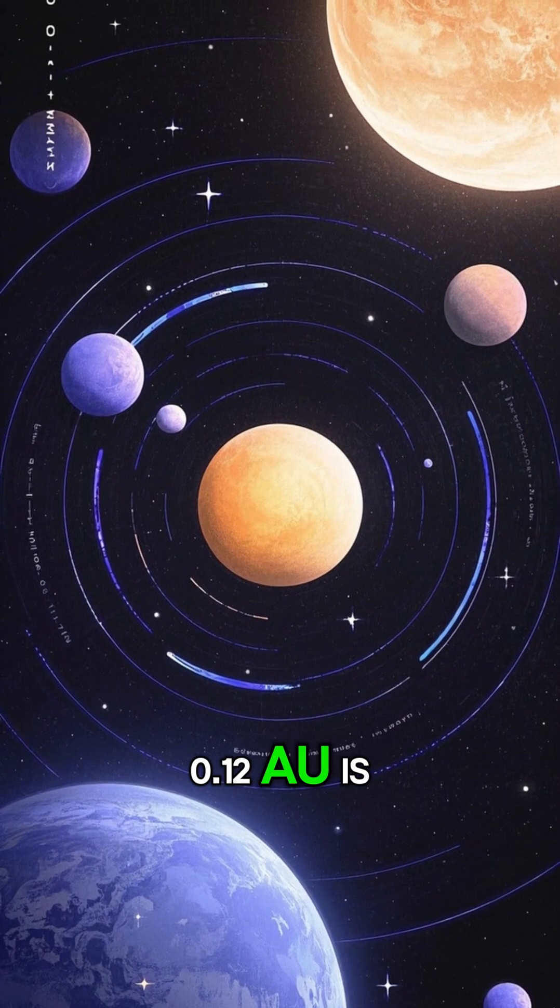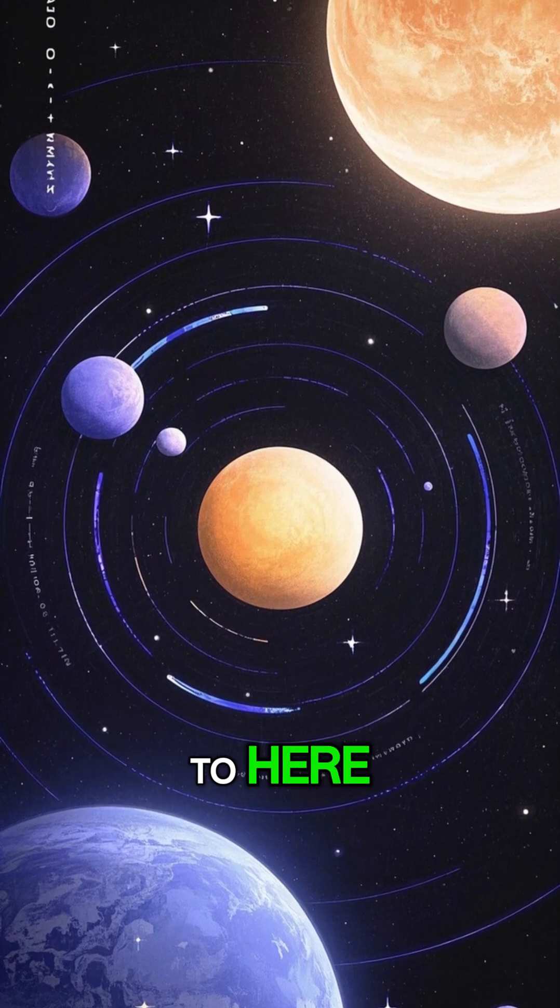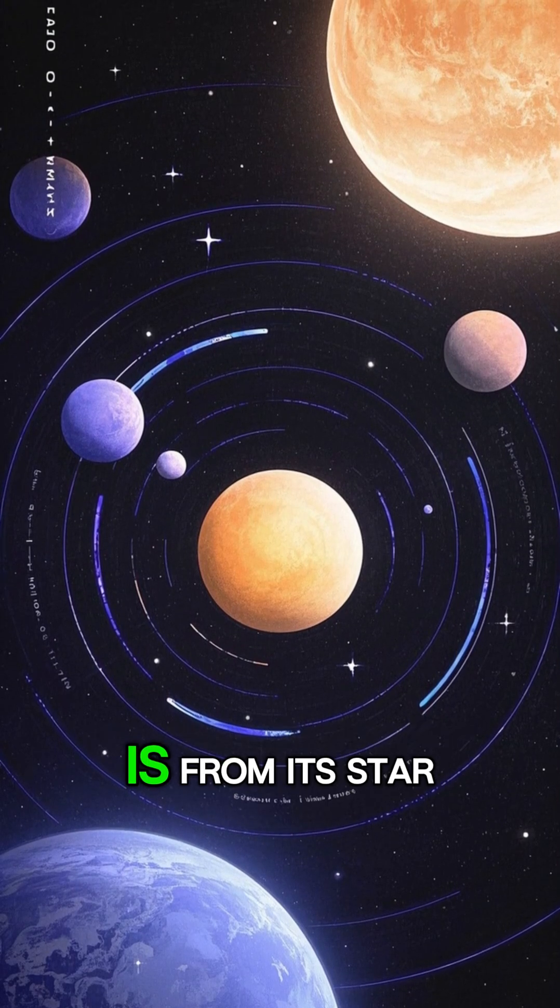Zero world, 12 AU is the distance from the sun to here. That's how far this planet is from its star.